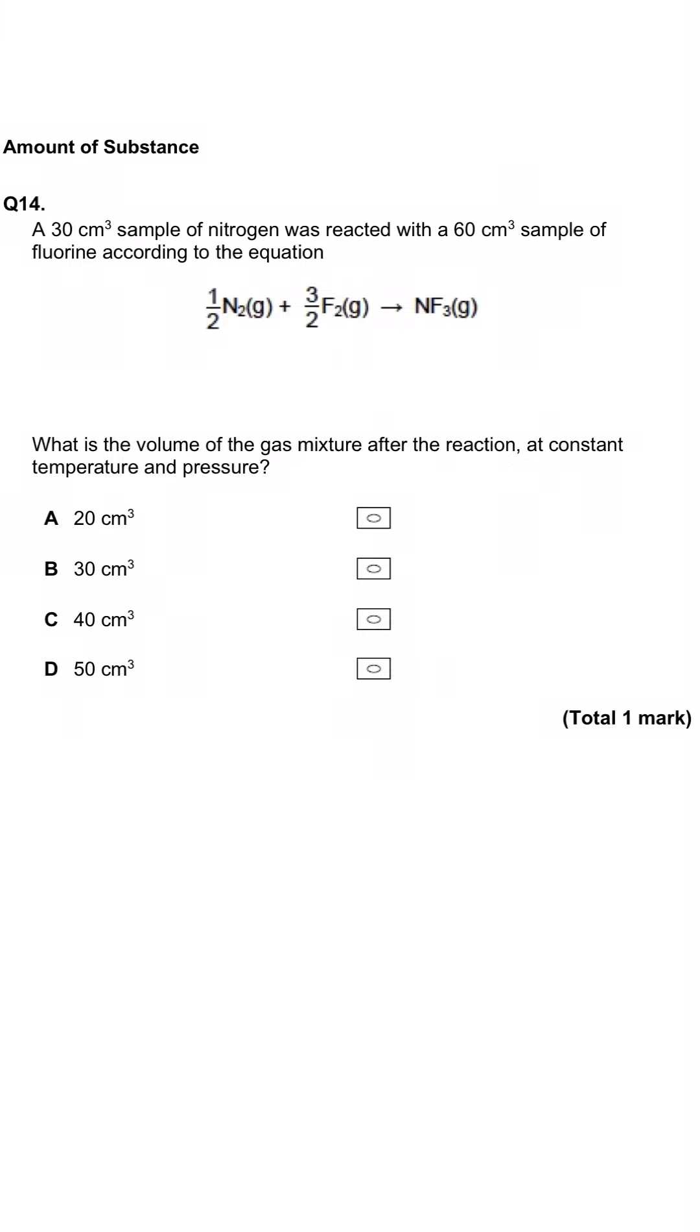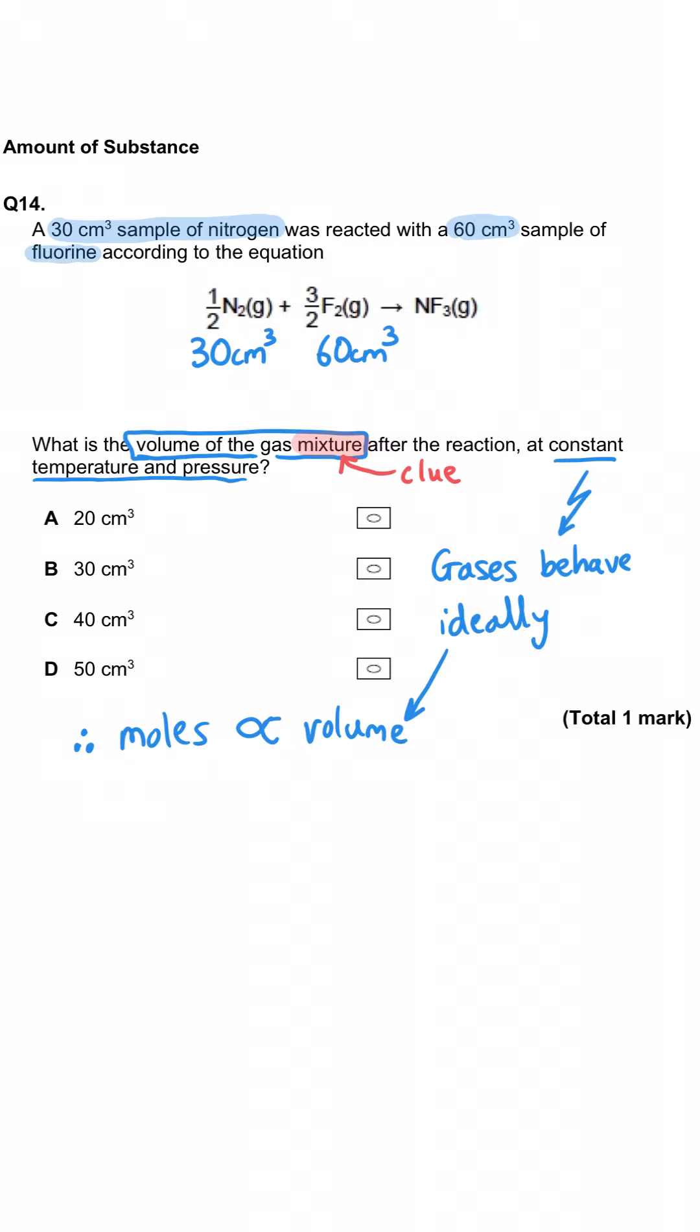Here we've got a gaseous reaction between nitrogen and fluorine making nitrogen trifluoride. We're starting with 30 cm cubed of nitrogen and 60 cm cubed of fluorine. We're being asked what the volume of the gas mixture will be after the reaction, given constant temperature and pressure. That means we're allowed to assume this all behaves ideally. The significance is that one mole of any gas will occupy the same volume as one mole of any other gas. We can treat volumes and moles and their ratios as being the same thing.